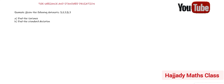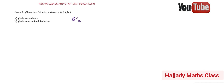I'm going to give you the formula for the variance. The first formula: if it is the population variance, we use sigma squared to represent the variance. So it is going to be summation of (x minus x̄) squared, over n.